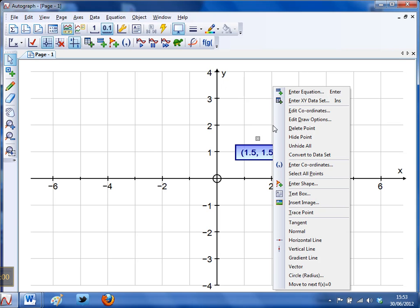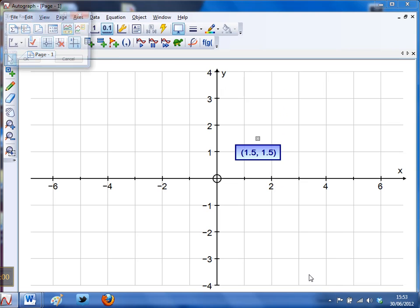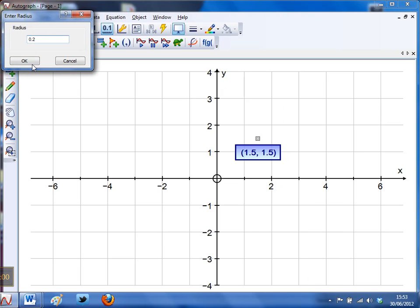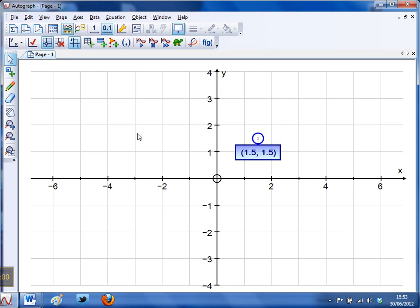I'm going to right click and we've looked at this in the past, just a cheeky little way of getting a bit of a circle on there. Circle of radius 0.2 and that'll just highlight the point a little bit better. And now I'm good to go.